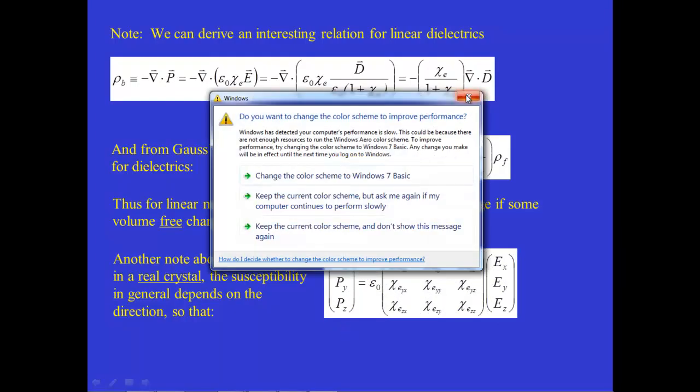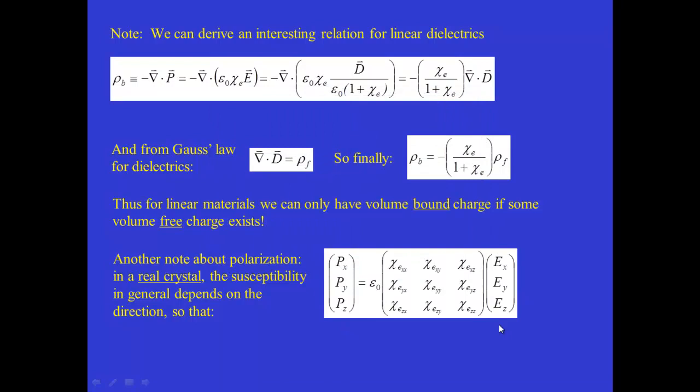And the most general case involves a matrix equation where the three components of the polarization vector are related to the three components of the applied electric field. And they're related through these terms on a 3×3 matrix. They're all susceptibility terms, but we label them χ_E_XX, χ_E_XY, χ_E_XZ, and so on.